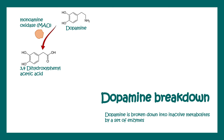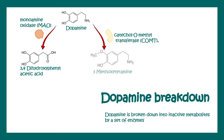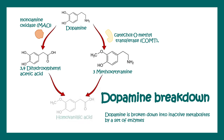Dopamine breakdown is a regulated process. Dopamine gets converted to 3,4-dihydroxyphenylacetic acid with the help of monoamine oxidase (MAO). Dopamine can also get converted to 3-methoxytyramine with the help of catechol-O-methyltransferase (COMT). Both products can eventually be converted to homovanillic acid, and thereby dopamine is degraded.